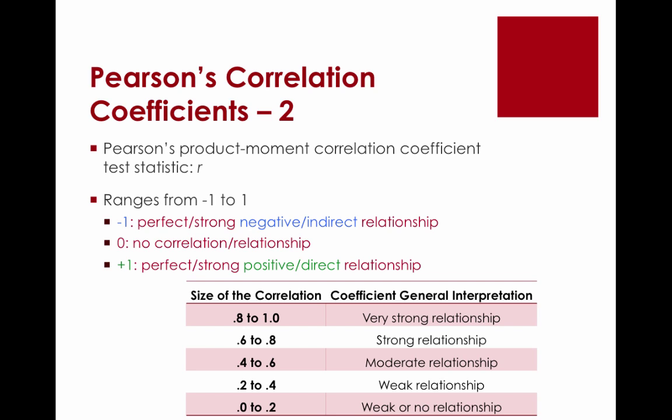When looking at the strength of relationships, we look at the absolute value of r. A value from 0.8 to 1 indicates a very strong relationship. 0.6 to 0.8 is strong. 0.4 to 0.6 is moderate. 0.2 to 0.4 is weak. And 0.0 to 0.2 indicates a weak to no relationship. To determine direction, we look at the sign — positive or negative — which indicates a direct or indirect relationship.